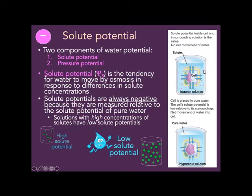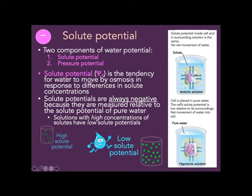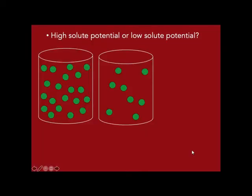We can see this when we look at cells. If a cell is in an isotonic solution — equally salty inside and outside — there's no net movement of water; the solute potential inside and outside is the same. If you take the cell and put it in pure water, the cell is saltier inside than outside, so the cell's solute potential is lower relative to its surroundings. Water comes in from outside to inside — from high solute potential to low solute potential.